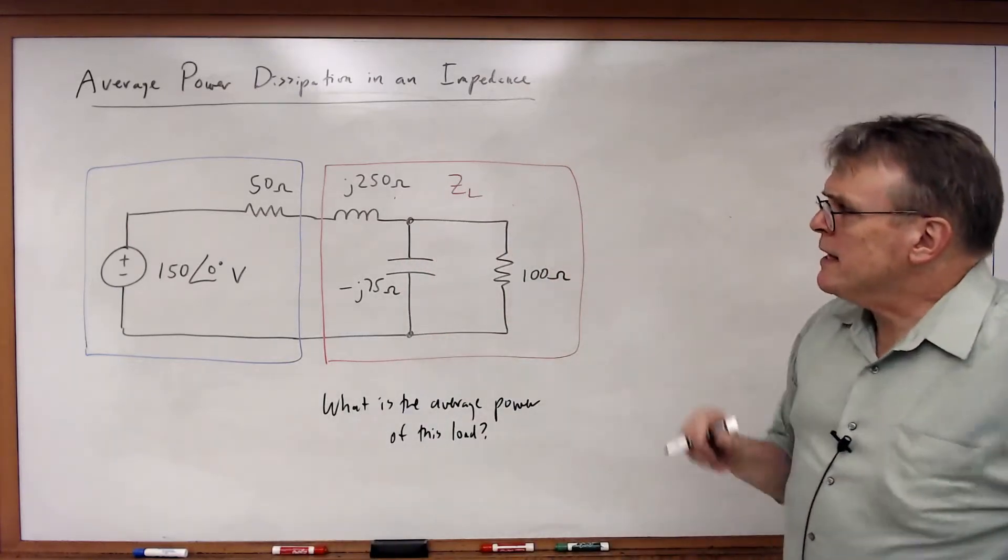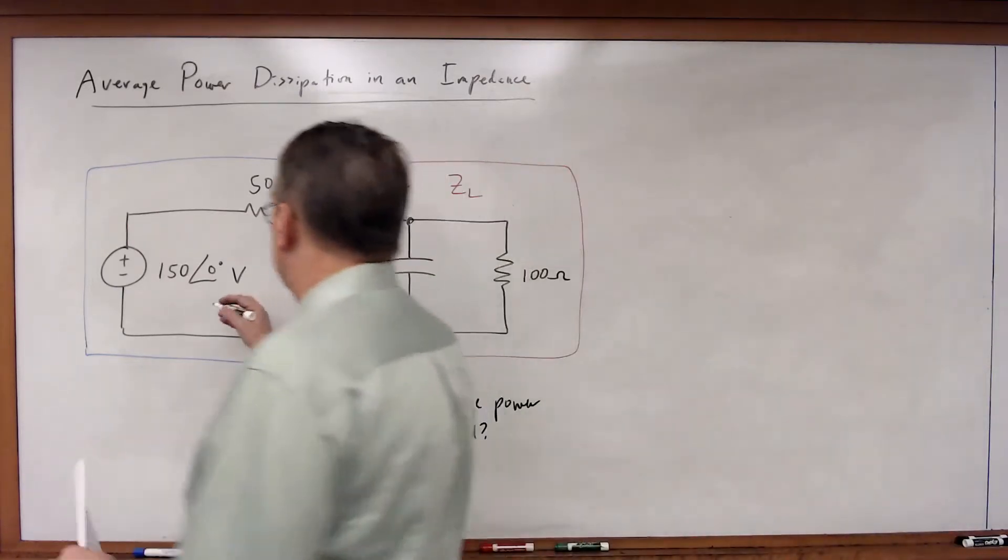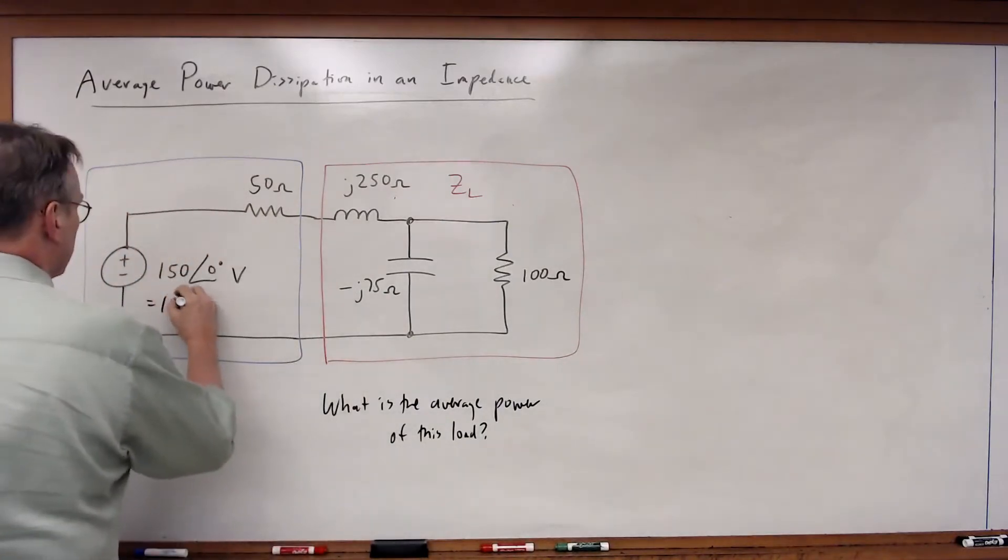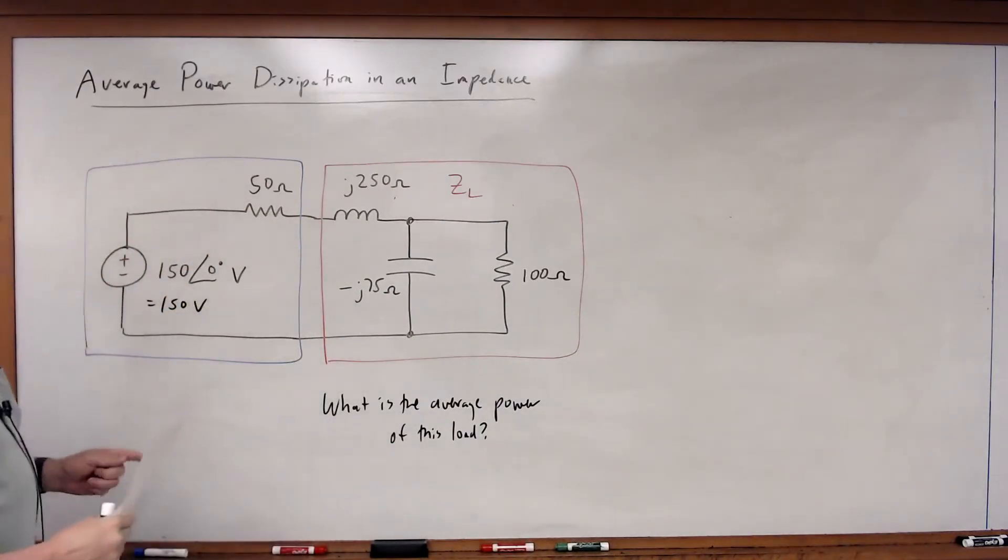Looking at this, we know that in rectangular form this will be 150 volts. So let's consider how we're going to solve this.